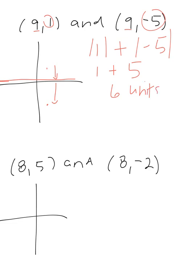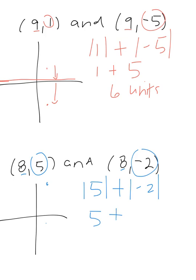Let's take a look at this one. We have (8,5) and (8,-2). The x-values are the same and the y's are different. The absolute value of 5 plus the absolute value of 2 gives you 5 plus 2, which is 7 units.